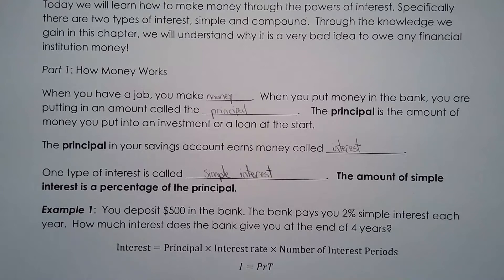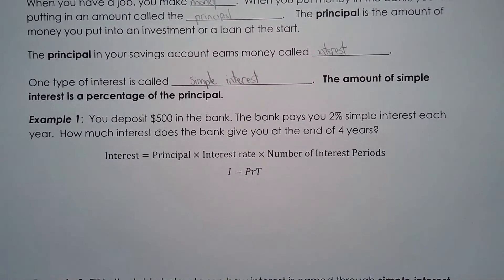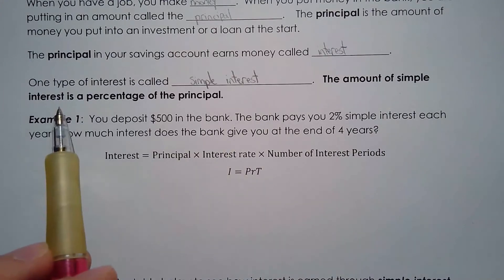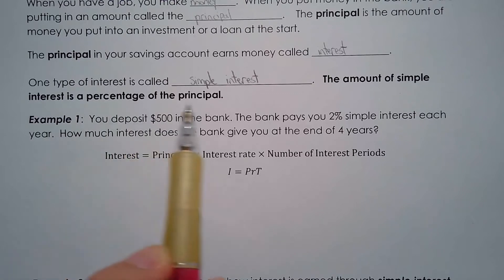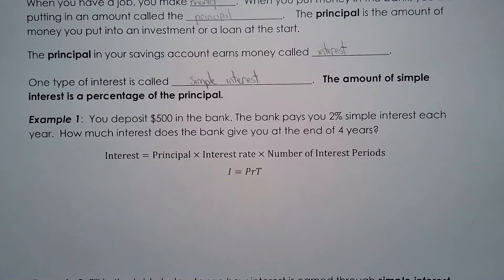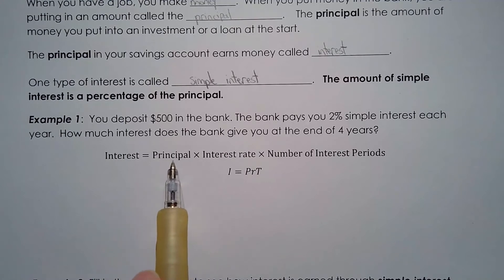So how do you calculate simple interest? Let's take a look at this example. You deposit $500 in the bank. The bank pays you 2% simple interest each year. How much interest does the bank give you at the end of 4 years? One thing you really have to remember is that simple interest is calculated as a percentage of the principal — that's very important to understand. You take your principal times your interest rate times the number of interest periods.